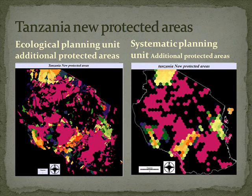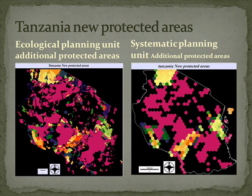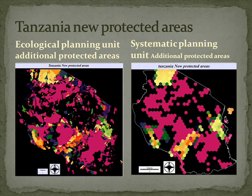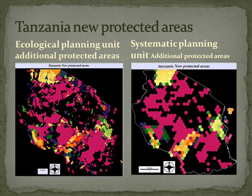A corridor is created as a new reserve area between Selous Game Reserve in the south and Rungwe Game Reserve. Another area needed for conservation is the Dar es Salaam region in the east, which is one of the most massive artificial surfaces in Tanzania.